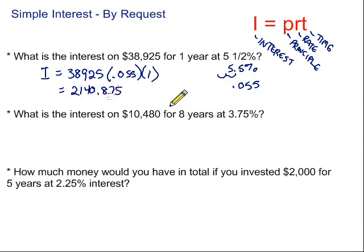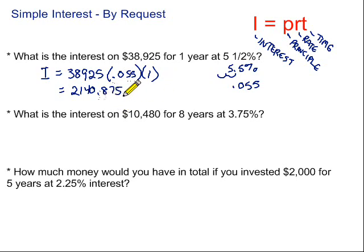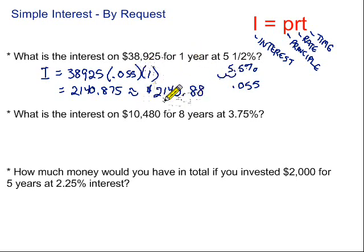38,925 times 0.055 times 1 gives us $2,140.875. When we're dealing with money, we work with two decimal places — cents — so we need to round this to the nearest cent. We look at the seven, look one number to the right which is a five — five or larger, so the seven rounds up. We get $2,140.88. That's the amount of interest you would pay or earn on $38,925 invested or borrowed for one year.